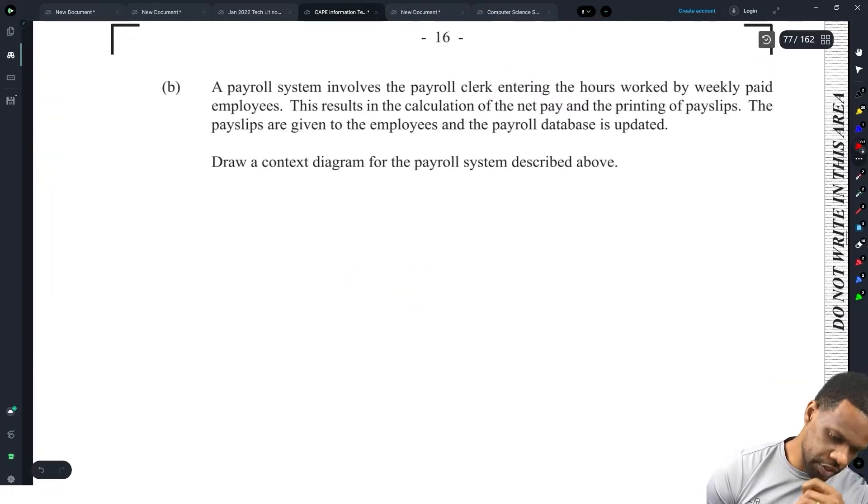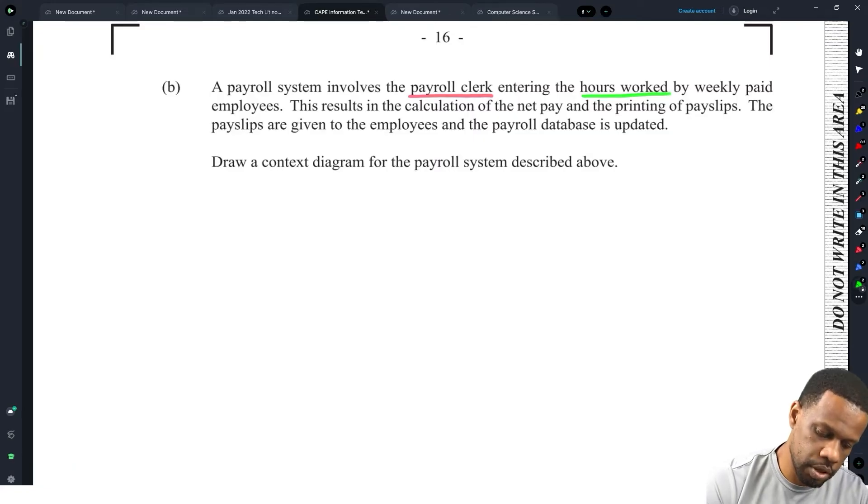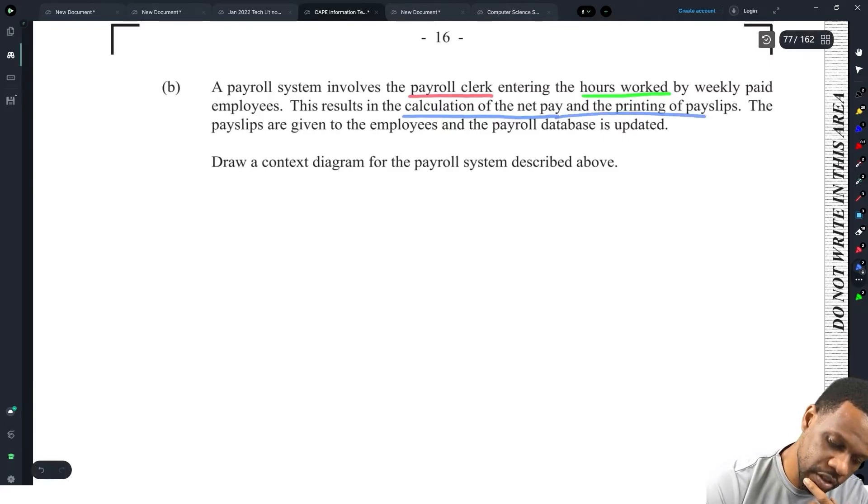A payroll system involves a payroll clerk. Payroll clerk is the external entity. They enter the hours worked, which will be the pieces of data. This results in the calculation of the net pay, so calculation of net pay is the process. The printing of payslips. The payslips are given to the employees, and the payroll database is updated.